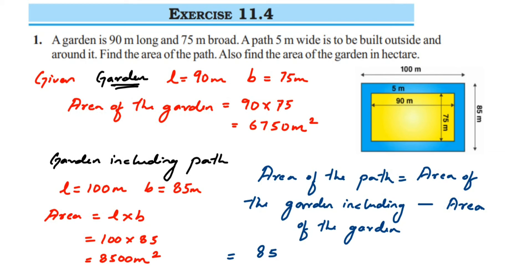When you subtract these two values you get 1750 meter square. So this is the area of the path — we've solved the first part.